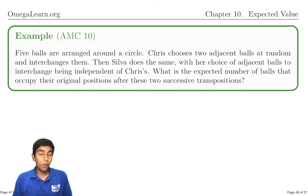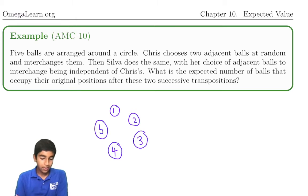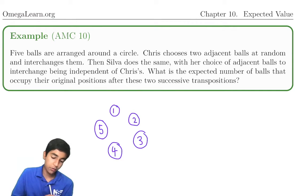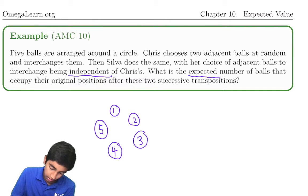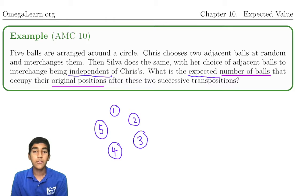Five balls are arranged around a circle. One, two, let's number them. Three, four, five. Chris chooses two adjacent balls at random and interchanges them. Then Silva does the same, with first choice of adjacent balls being completely independent of Chris's choice. What's the expected number of balls that occupy their original positions after these two successive transpositions?